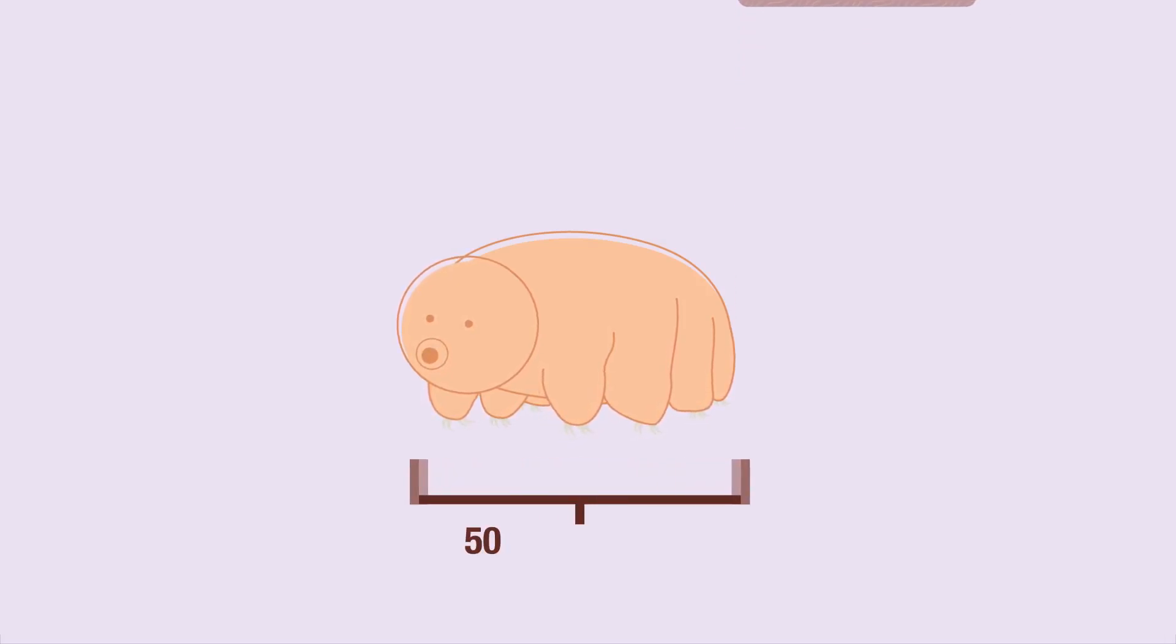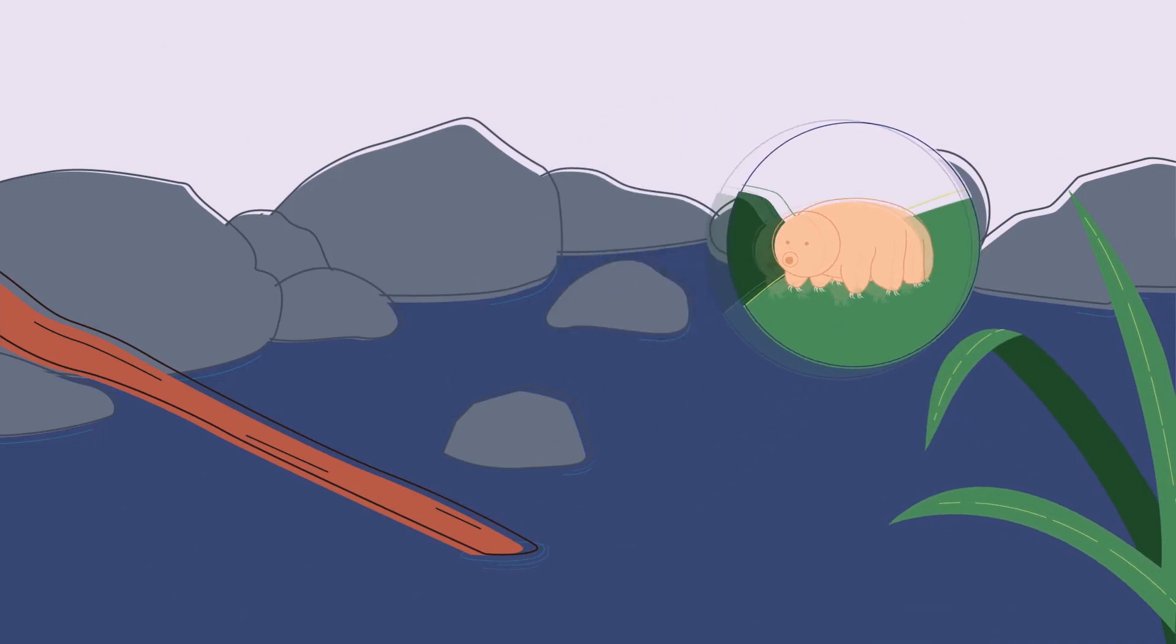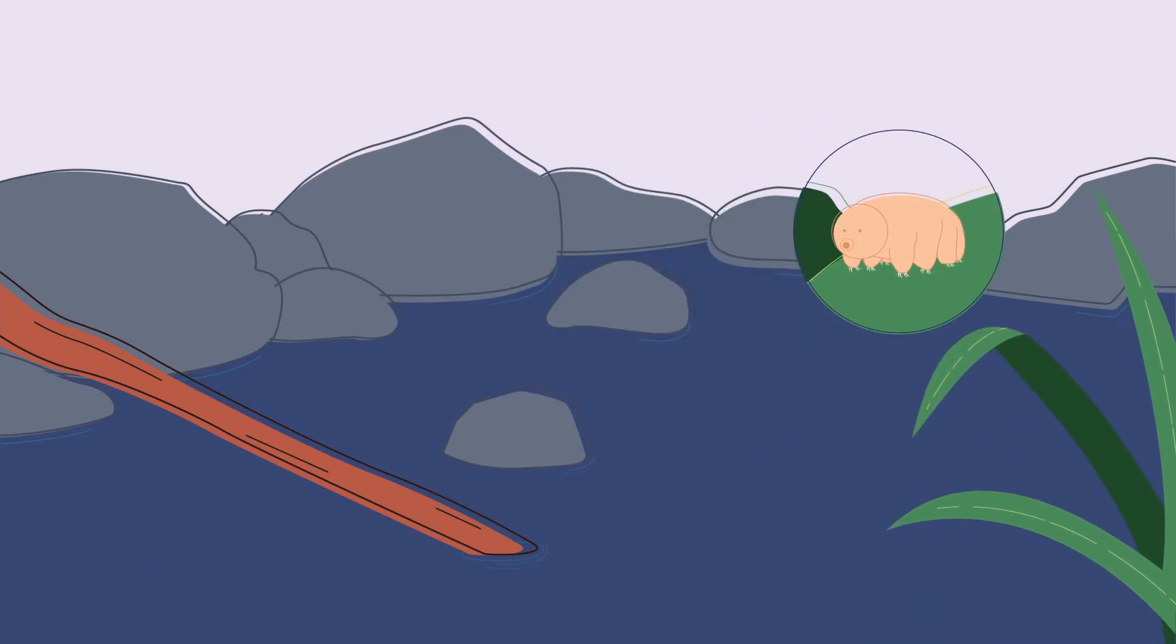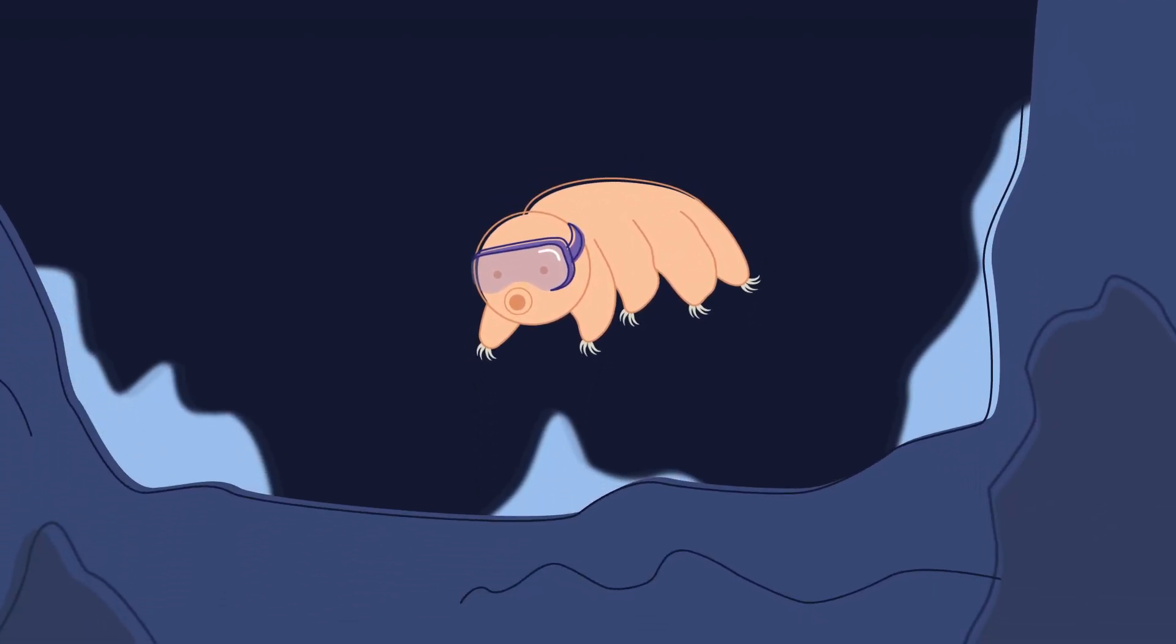Adult water bears are typically 500 microns to 1 millimeter long. Their favorite food is moss and they're most commonly found in streams, rivers, or ponds. What's amazing about water bears is their resilience. They can survive pressures up to 600 megapascals, six times that of the deepest ocean trenches.